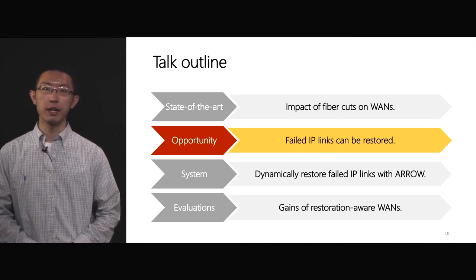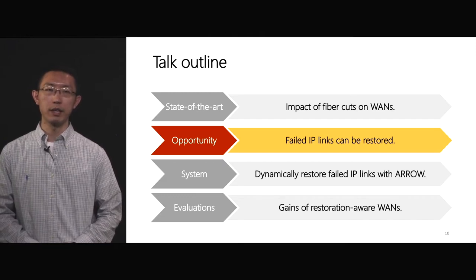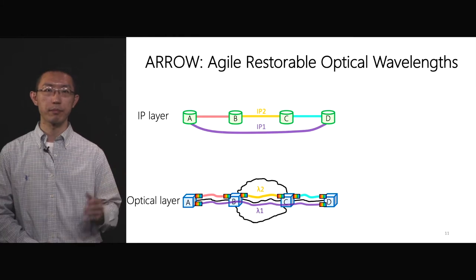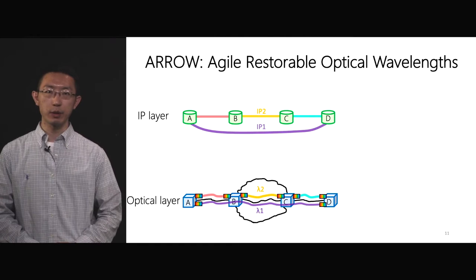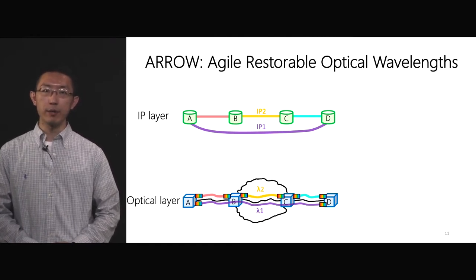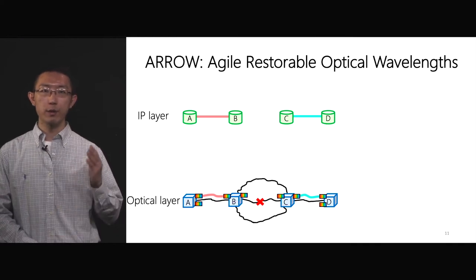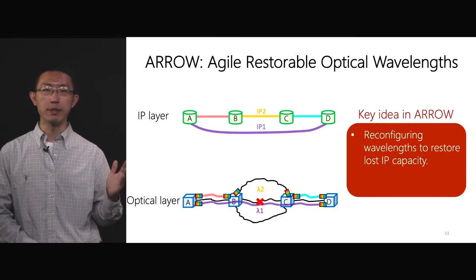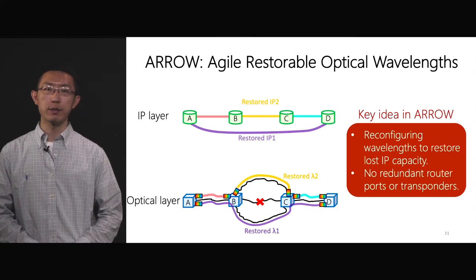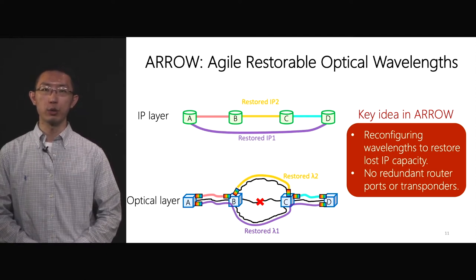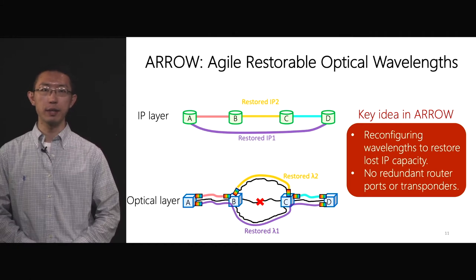Our work goes beyond the state-of-the-art by unlocking the opportunity to restore failed IP links. We propose ARROW to reduce the redundancy while maintaining network availability. ARROW is the abbreviation for Agile Restorable Optical Wavelength. Different from the state-of-the-art approach, when a fiber cut happens, ARROW achieves the same availability goal by reconfiguring wavelengths from the broken fiber to healthy fibers to restore the lost IP capacity using the same network hardware without redundant router ports or transponders.